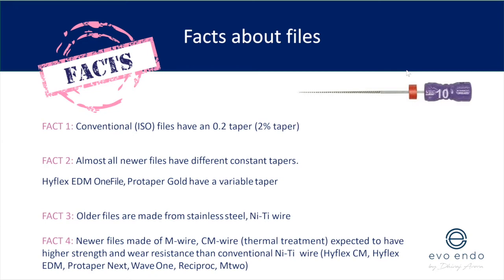Almost all newer file systems have different constant tapers — not produced to ISO standards. They'll have 0.04 or 0.06 tapers, and some file systems such as ProTaper Gold and HyFlex EDM still have a variable taper. Older files are made from stainless steel or traditional NiTi wire. Traditional NiTi has superelasticity and shape memory. Heat-treated NiTi — made from CM wire — is an upgrade, offering extreme flexibility and greater fracture resistance.